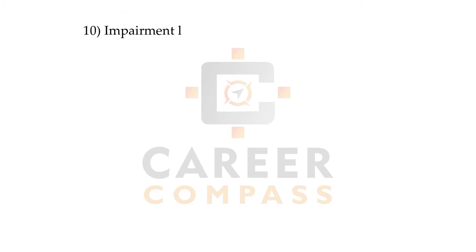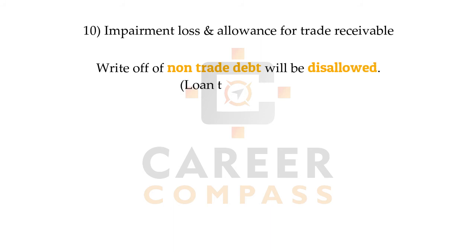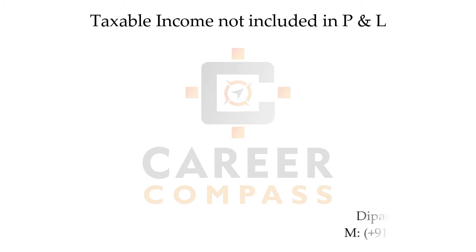The last disallowable item is allowances for trade debts or impairment loss. Any allowance for trade debts will always be allowed. However, if there are non-trade debts, any allowance or write-off of a non-trade debt will not be allowed. That completes the list of disallowable expenditures.